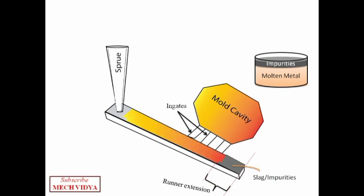In doing so, the slag gets trapped in the runner extension and cannot flow inside the cavity since they are lighter than the parent metal. The parent metal will not allow these lighter slags to enter the mold cavity.